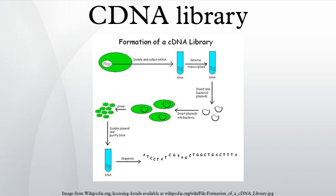cDNA library construction: cDNA is created from a mature mRNA from a eukaryotic cell with the use of an enzyme known as reverse transcriptase. In eukaryotes, a poly-A tail distinguishes mRNA from tRNA and rRNA and can therefore be used as a primer for reverse transcription.